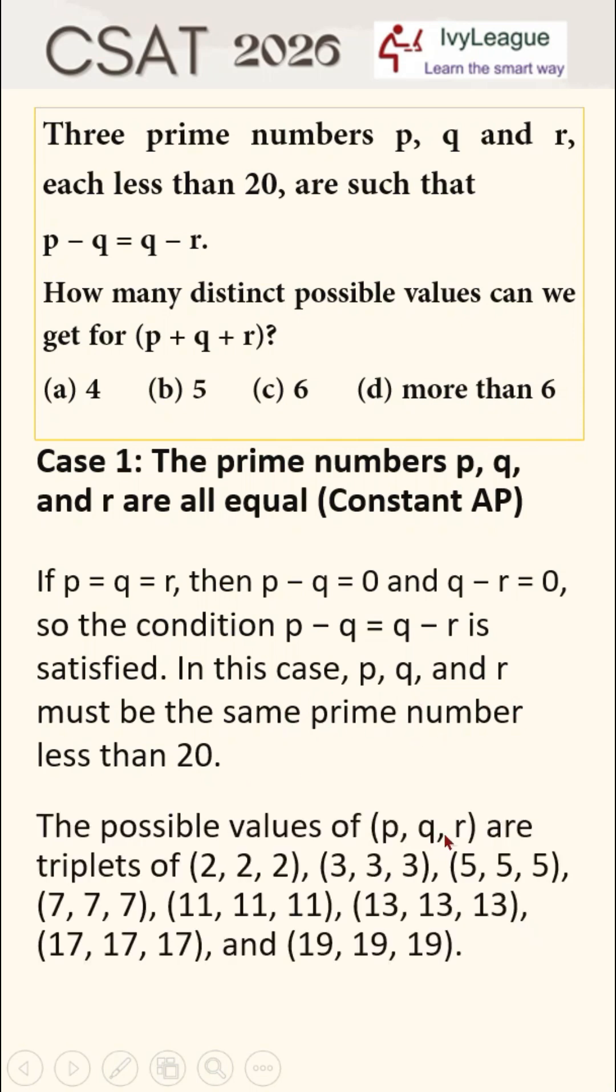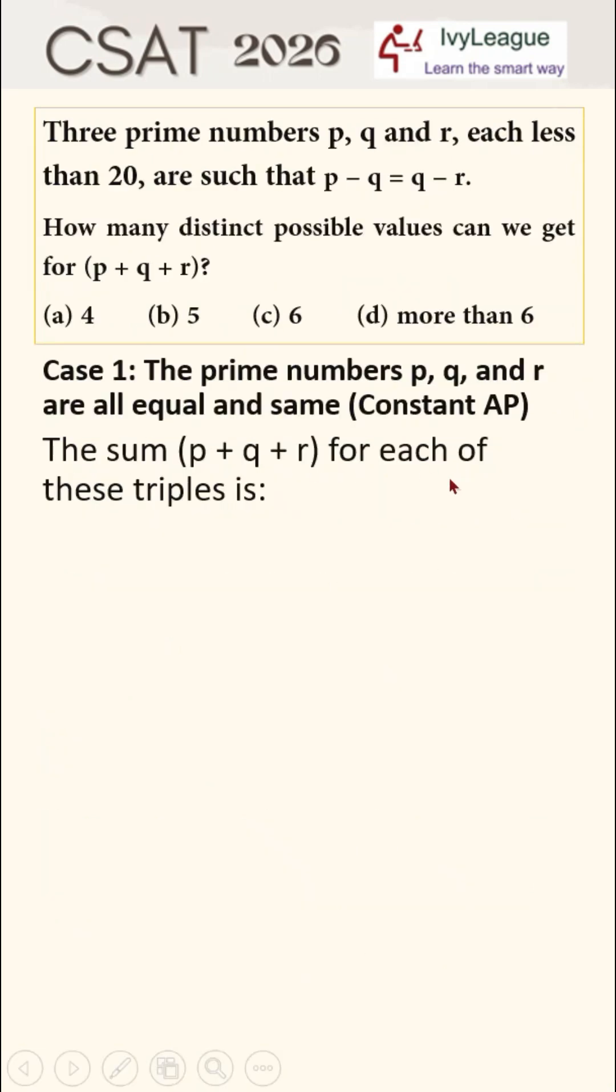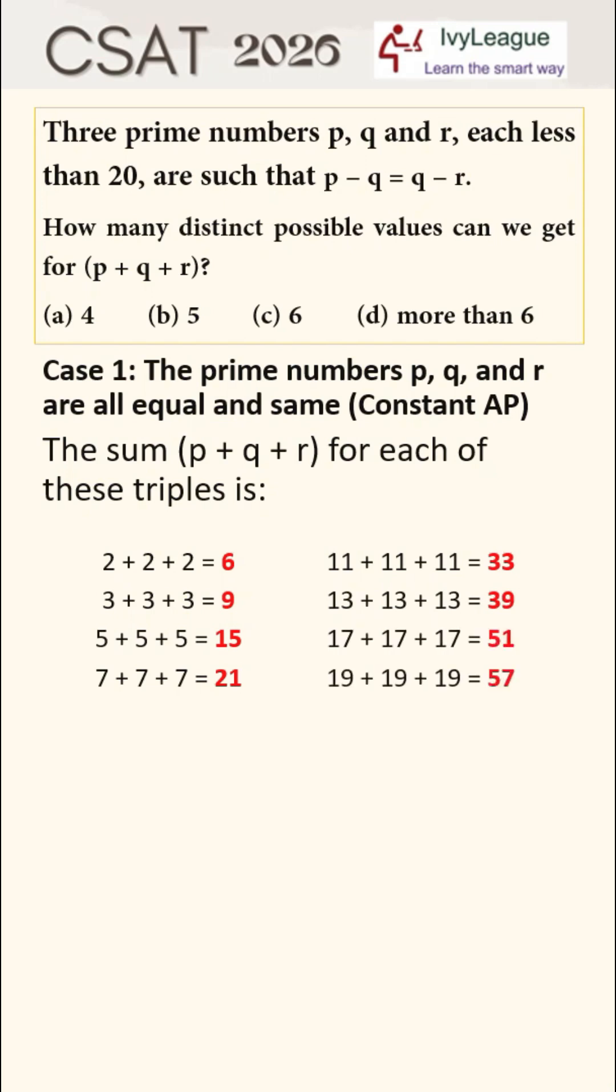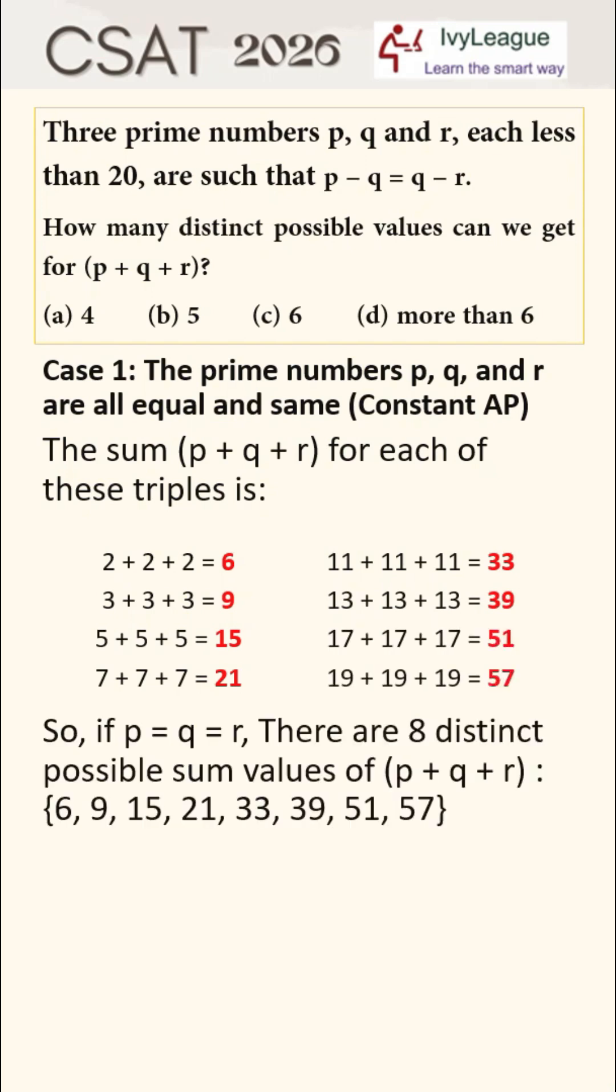In this case, p, q, and r must be the same prime number less than 20. The possible values of p, q, and r are triplets of 2, 3, 5, 7, 11, 13, 17, and 19. So the sum p plus q plus r for each of these triples is 6, 9, 15, 21, 33, 39, 51, and 57. So if p is equal to q is equal to r, then there are eight distinct possible sum values of p plus q plus r.